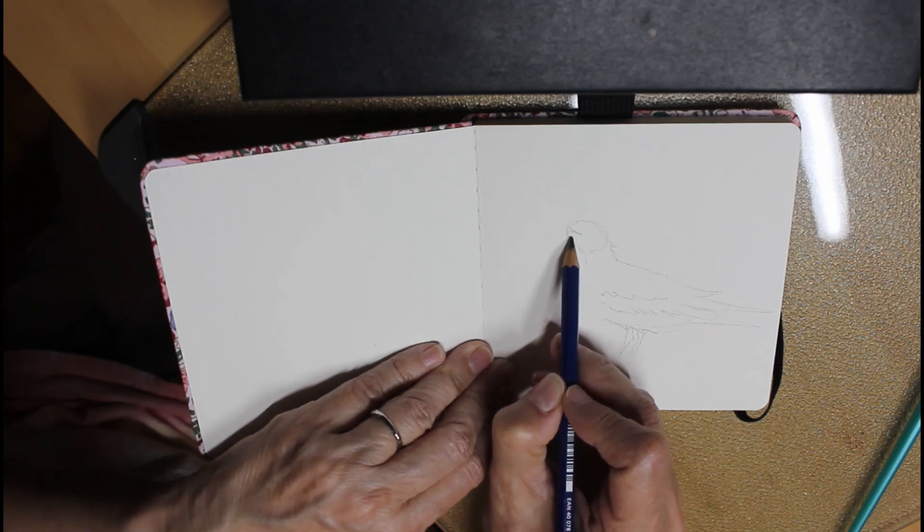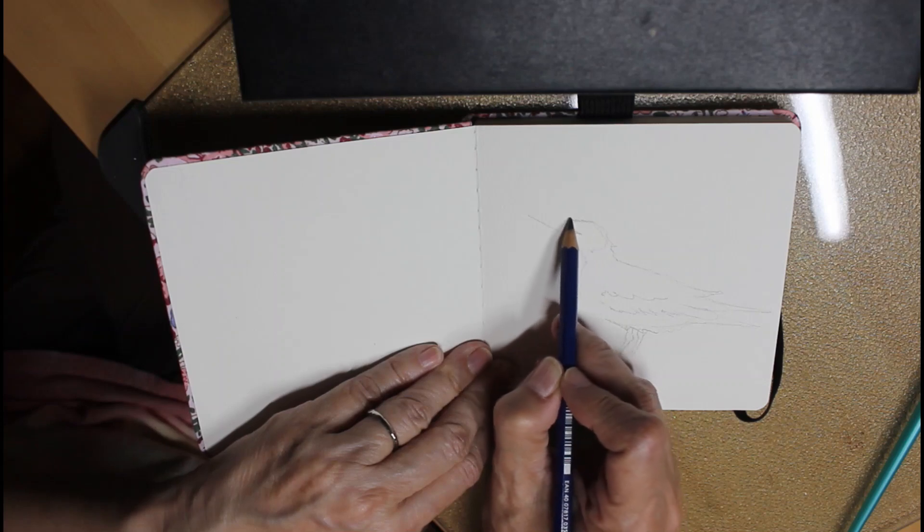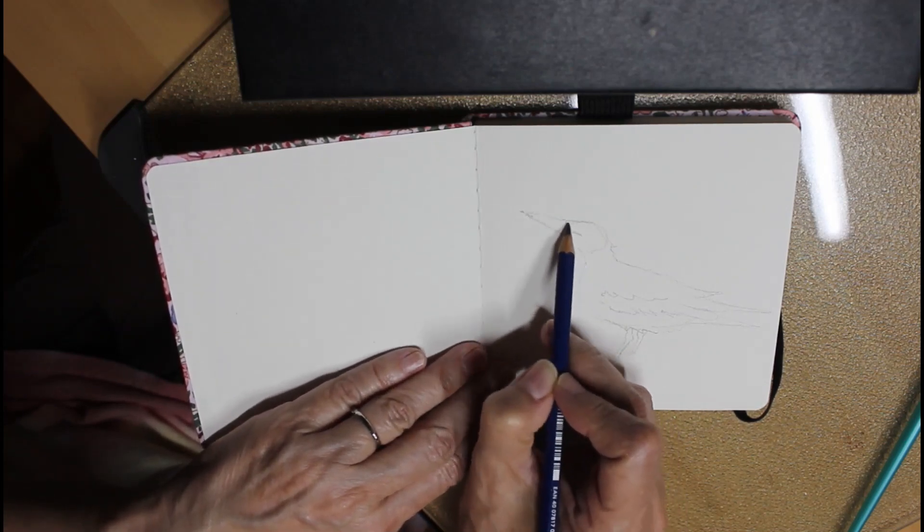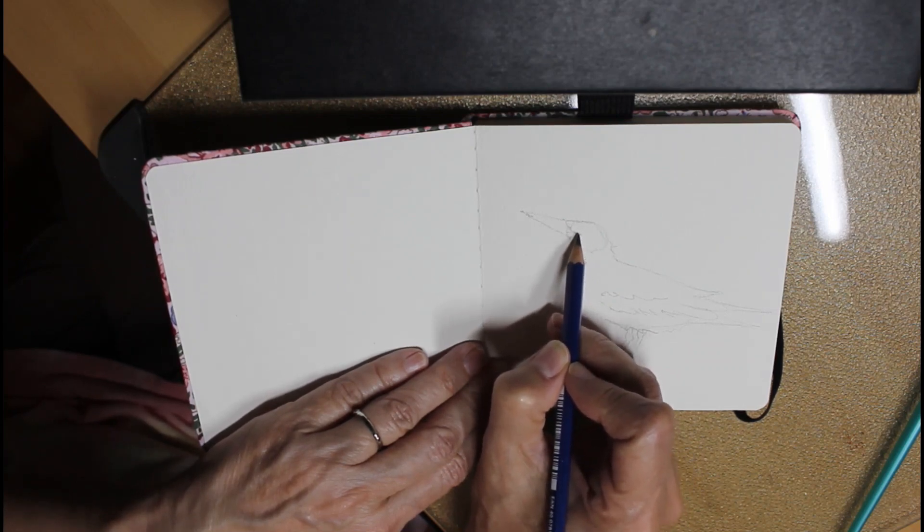So here, what I'm doing is just drawing the outline of the bird. And as I said, I didn't want his head pointed down. I wanted it more looking up. And so I made that adjustment as I was going.